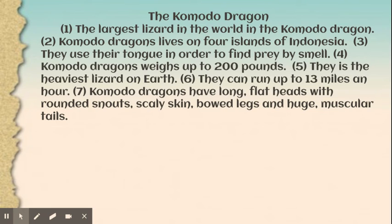Now we're going to look at a different type of grammar problem. I'm going to read a paragraph to you: 'The Komodo dragon is the largest lizard in the world. Komodo dragons live on four islands of Indonesia. They use their tongue to find prey by smell. A Komodo dragon weighs up to 200 pounds and is the heaviest lizard on earth. They can run up to 13 miles an hour. Komodo dragons have long flat heads with rounded snouts, scaly skin, bowed legs, and huge muscular tails.'